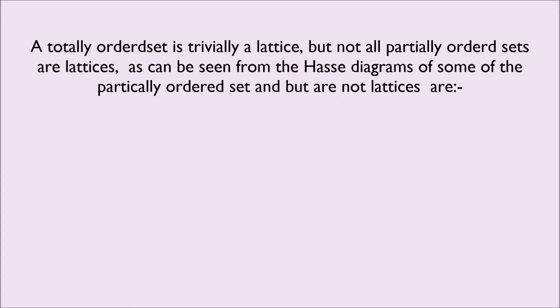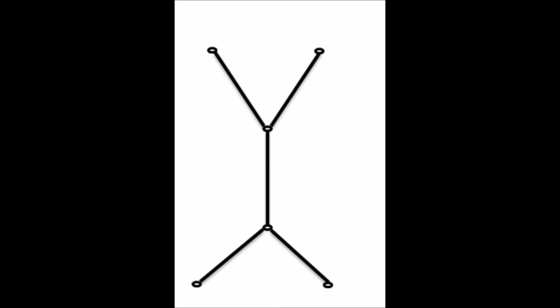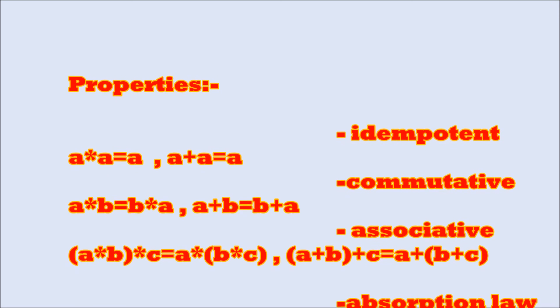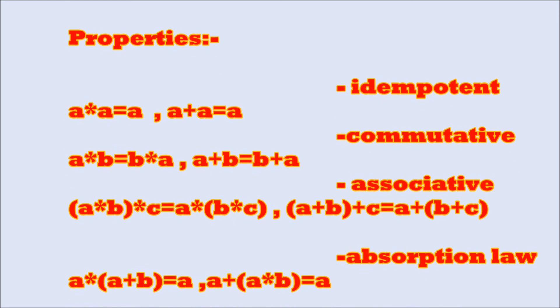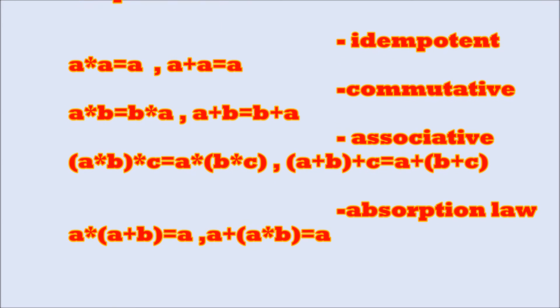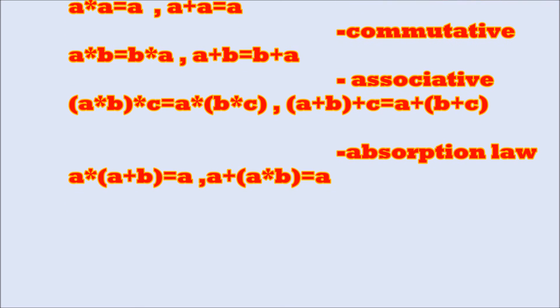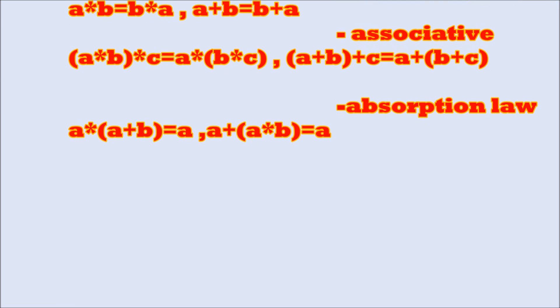From the Hasse diagram we can see some partially ordered sets that are not lattices. Now the properties of lattices: First, idempotent — A ∧ A = A and A + A = A. Second, commutative — A ∧ B = B ∧ A and A + B = B + A. Third, associative — (A ∧ B) ∧ C = A ∧ (B ∧ C) and (A + B) + C = A + (B + C). Fourth, absorption law — A ∧ (A + B) = A and A + (A ∧ B) = A.